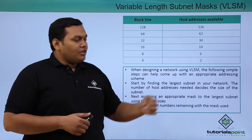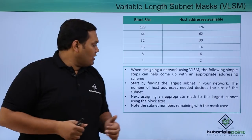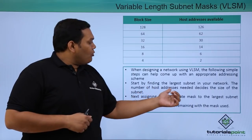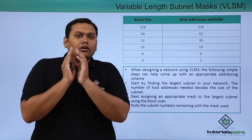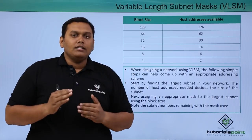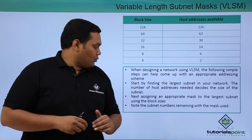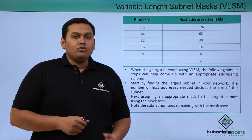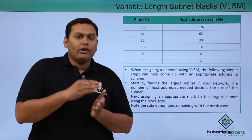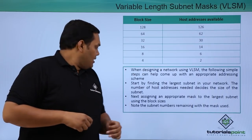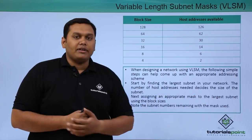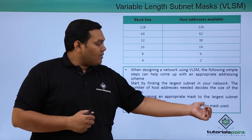When designing a network using VLSM, you follow five steps. First, find the largest subnet in your network and the number of host addresses needed — recognize the largest subnet and the hosts residing on it. Then assign the appropriate subnet mask to the largest subnet first, using block sizes to assign it to the largest subnet.